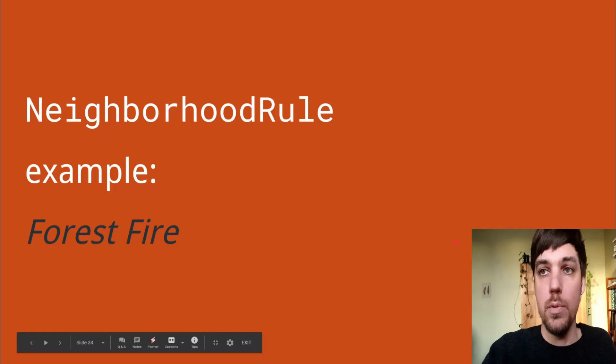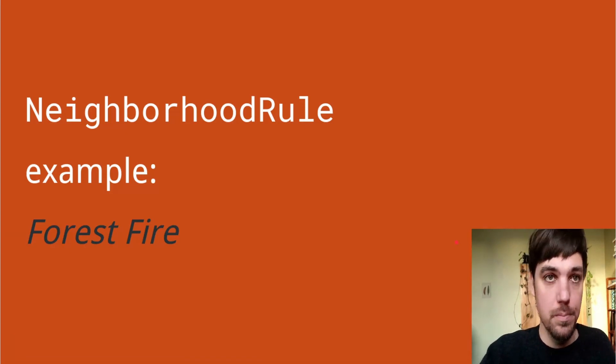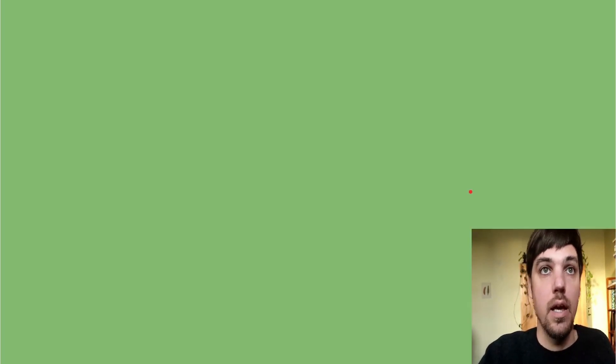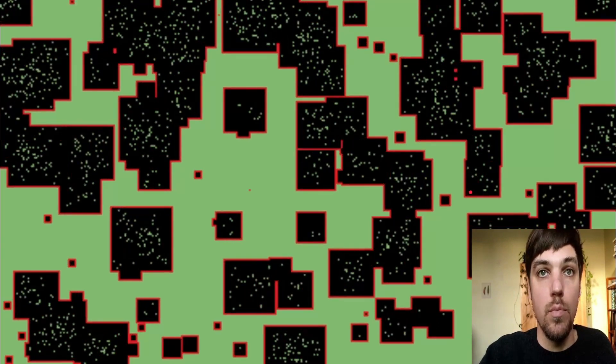The next example is a forest fire model. The basic concept is that the current cell is set to burning if any neighboring cells are burning. It's set to dead if it's currently burning, and with some possibility, it will be set to alive if it's currently dead. We can run that with a Moore neighborhood radius one and get a pattern like this.